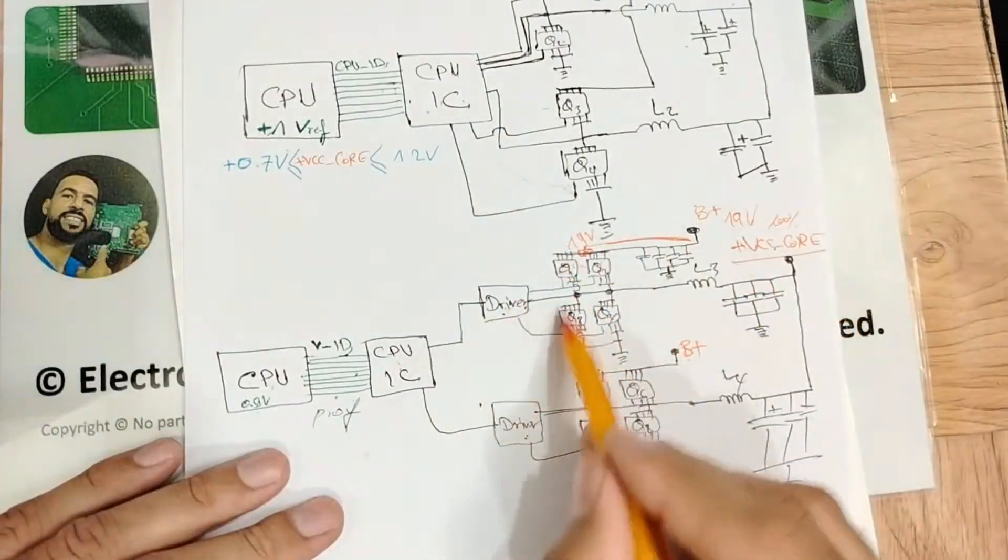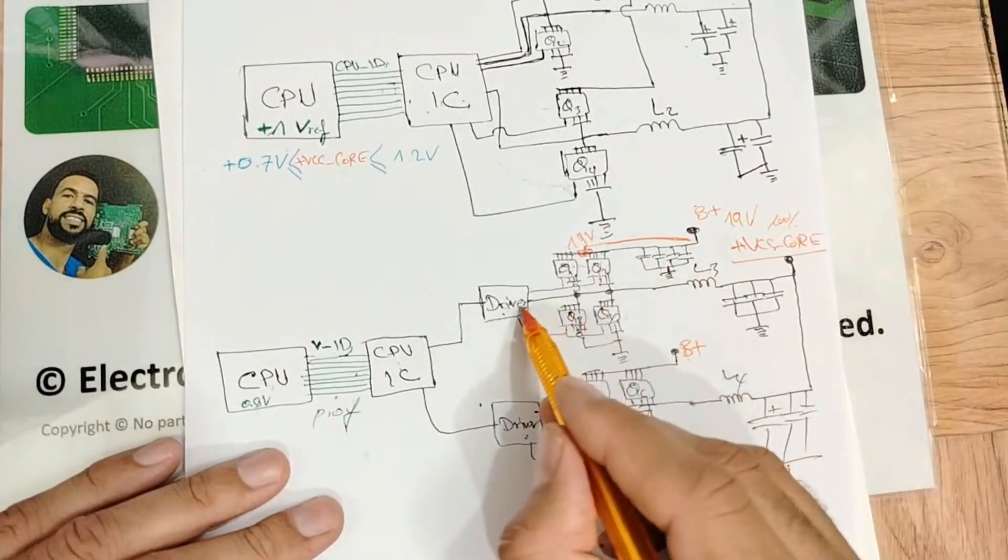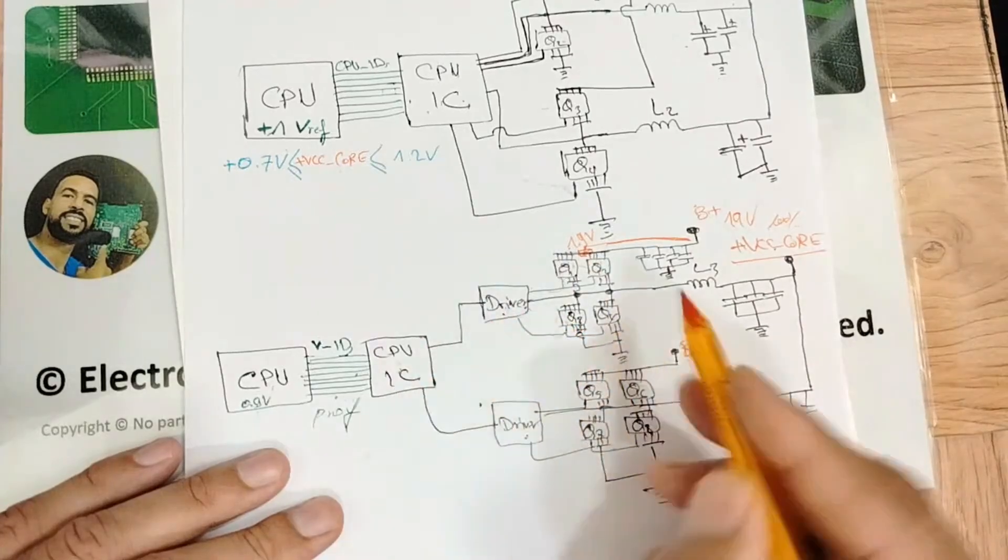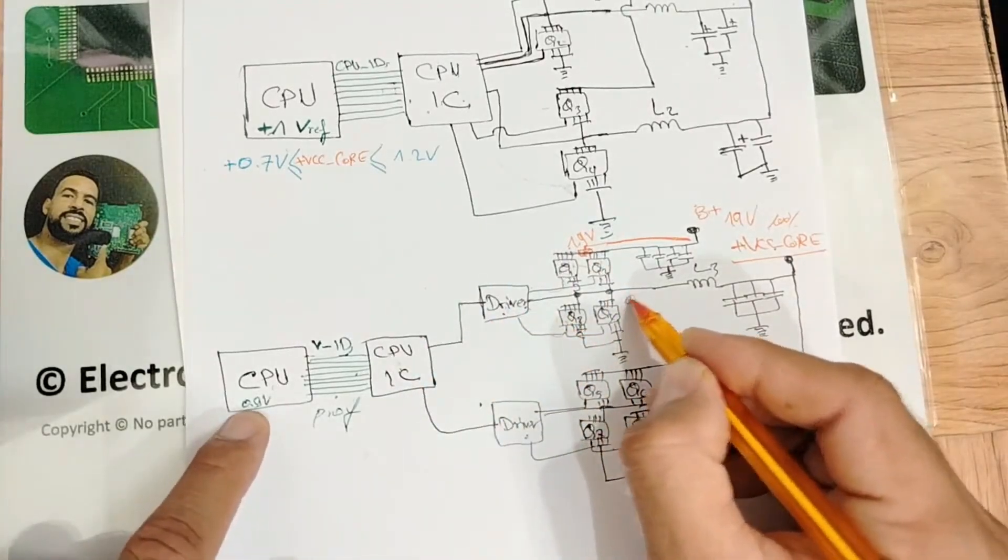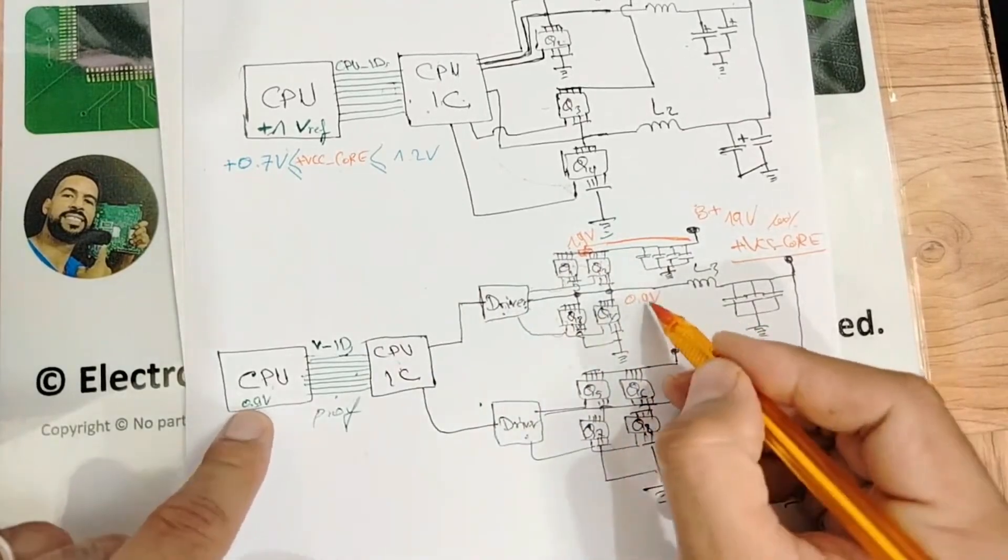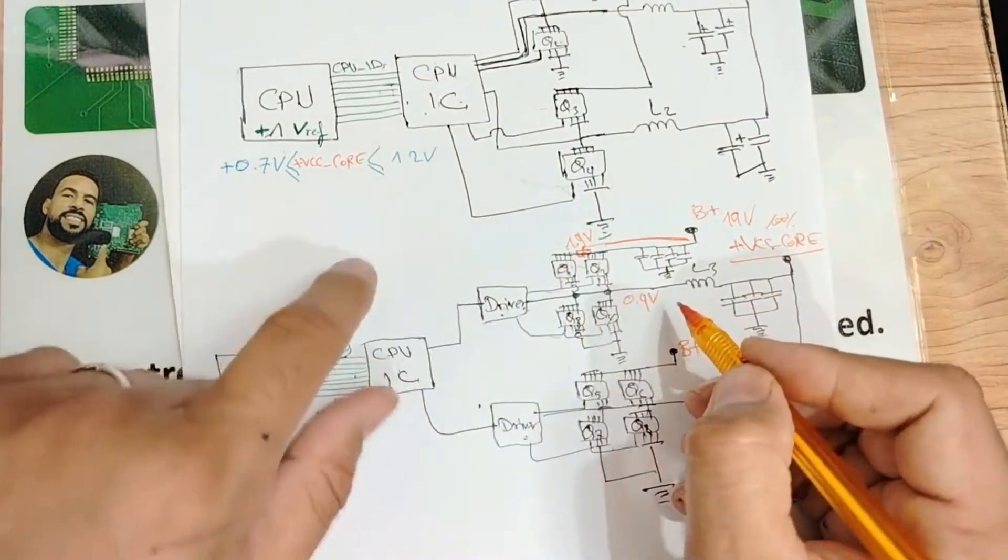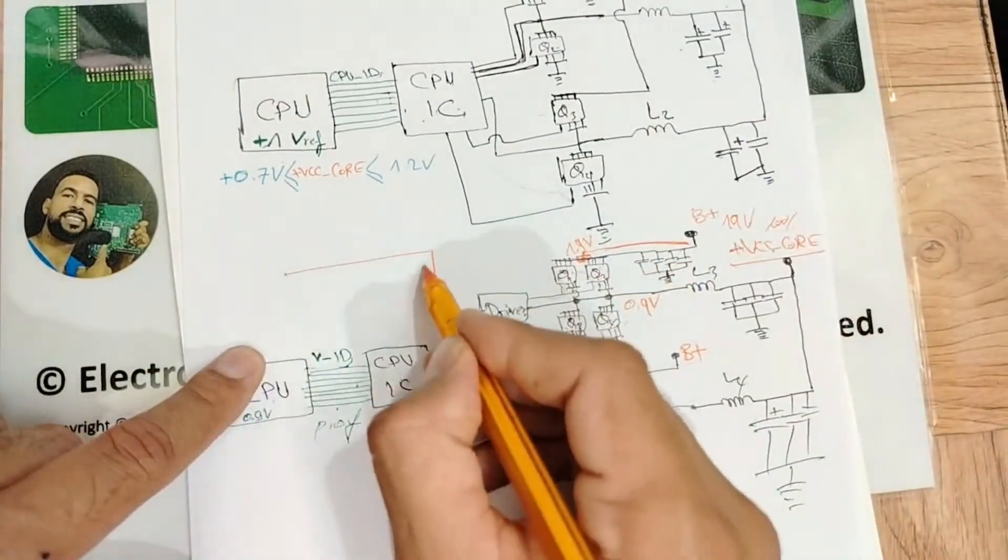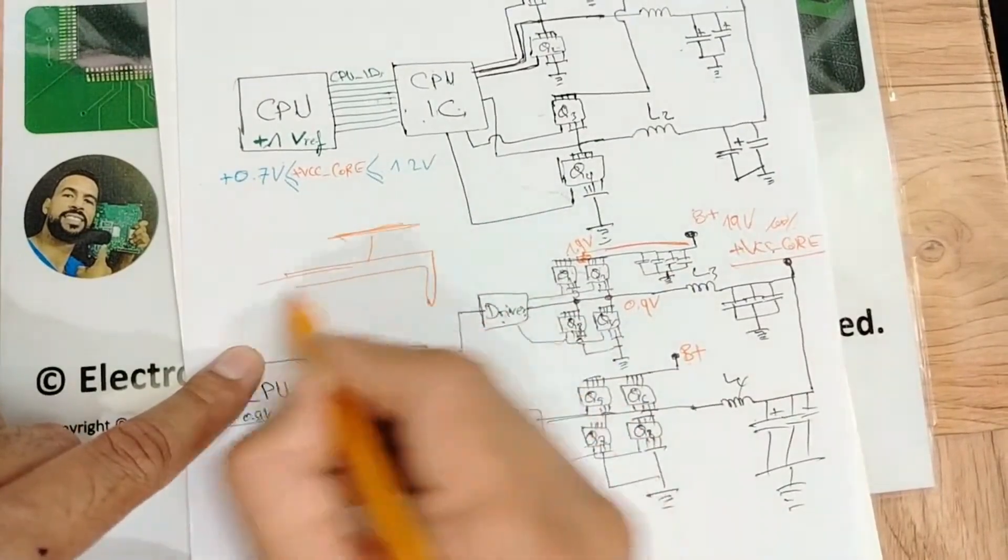So here we have 19 volts. Those MOSFETs will be basically controlled by the driver and the IC to get here how much? 0.9 volts. Here we got 0.9 volts.